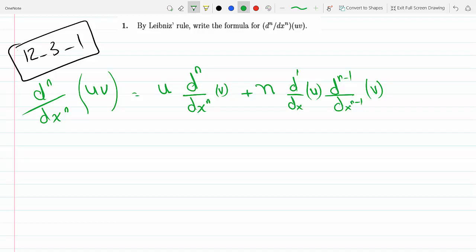Over 1 factorial which is 1, and now I can keep going. So plus, now I bring the n-1 down, so this becomes n times (n-1) over 2 factorial, and the u derivative goes up by 1, so this is the second derivative of u.